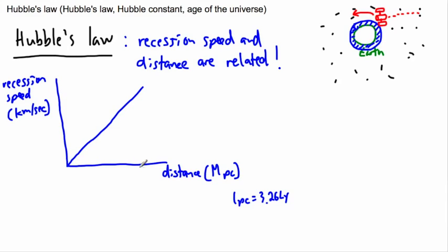So if something is this far away, what you could do, sorry, if something has a recession speed of this value right here, and you can say, ah, that means it's this far away, or vice versa. If you see something this far away, you can estimate it's that fast. That's how fast it's going. So that has to do with the size of the universe.